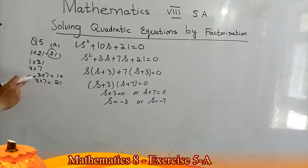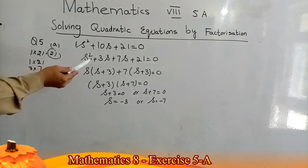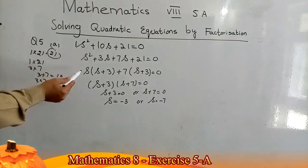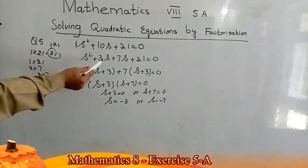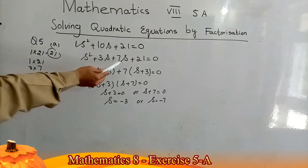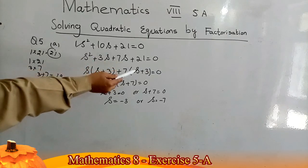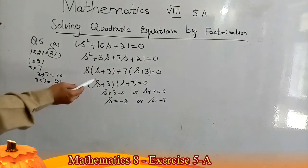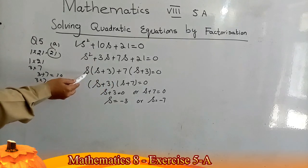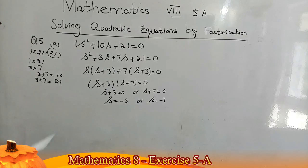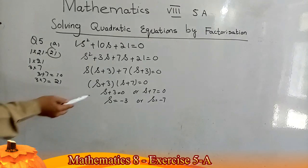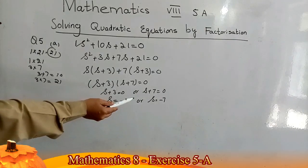I will use these two factors as coefficients of s: s² + 3s + 7s + 21. From the first two terms I take s as a common factor to get s(s + 3). From the last two terms I take 7 as a common factor to get 7(s + 3). Now (s + 3) is common, giving (s + 3)(s + 7) = 0. Either s + 3 = 0 giving s = −3, or s + 7 = 0 giving s = −7.